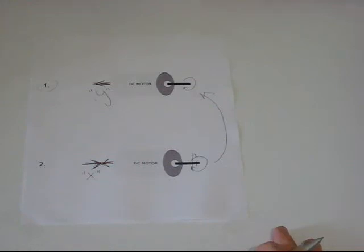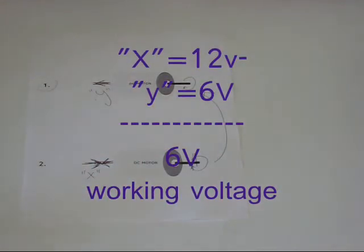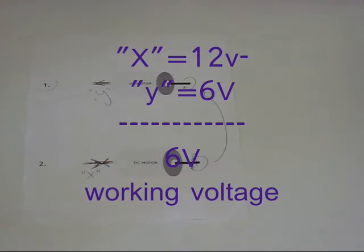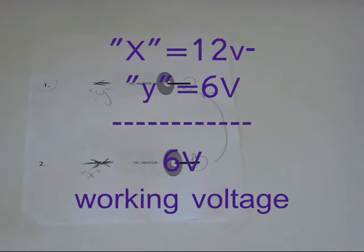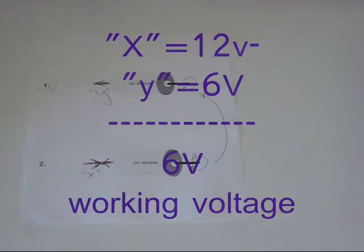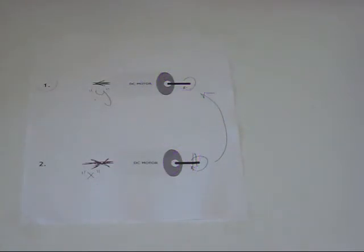whilst X remains at 12 volts because the power supply is independent of the motor. So back to our equation. We have X is 12 volts minus Y is 6 volts. You have 6 volts left. Now the working voltage is 6 volts, which is higher than 3 volts, therefore the motor consumes more.